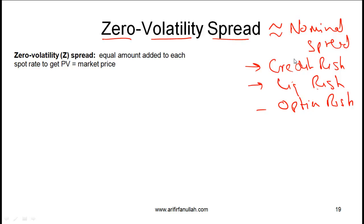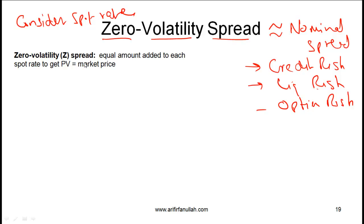The key difference is that the zero volatility spread does consider spot rates. Unlike the nominal spread, which does not consider how interest rates change over time, the zero volatility spread considers the spot rates over the maturity period of the bond. At a high level, the Z spread is equal to the amount added to each spot rate to get the present value equal to the market price.